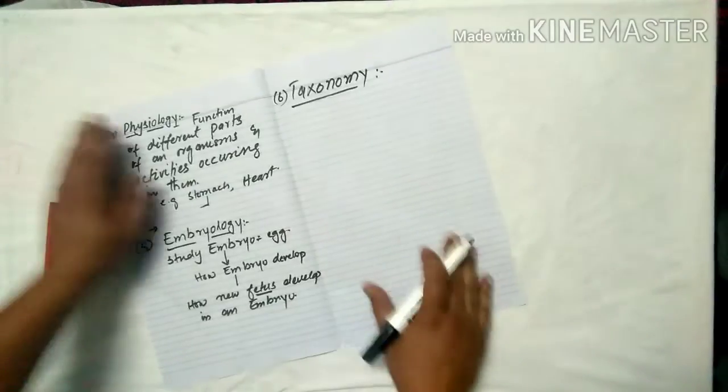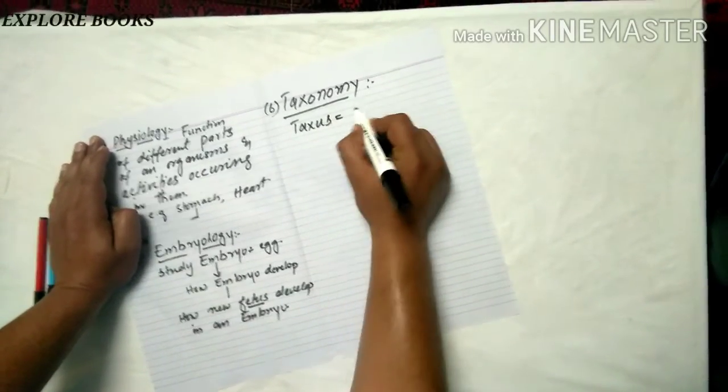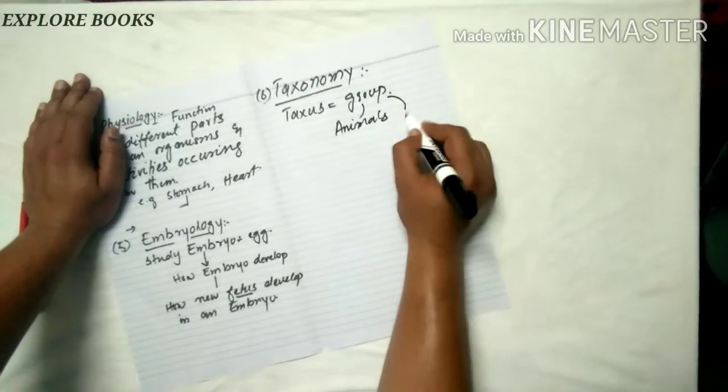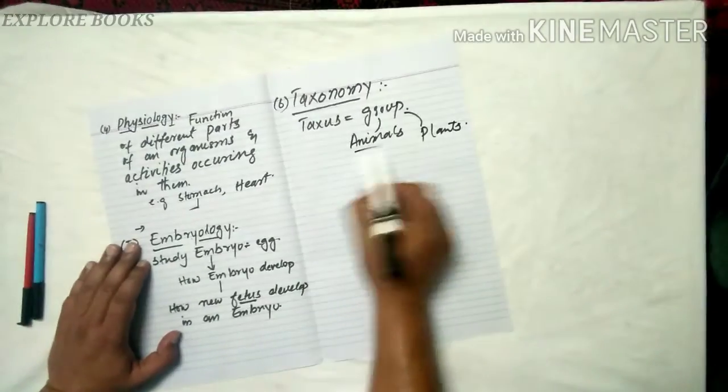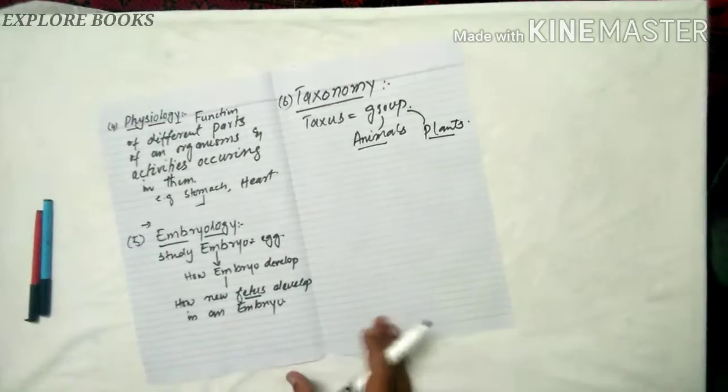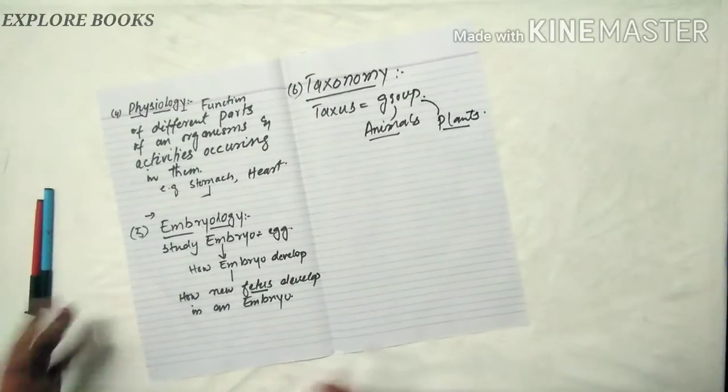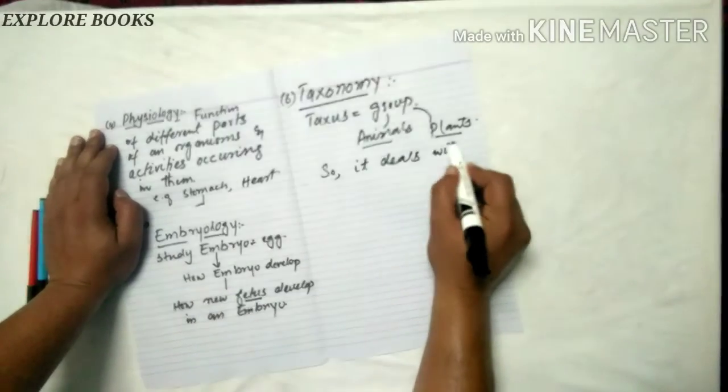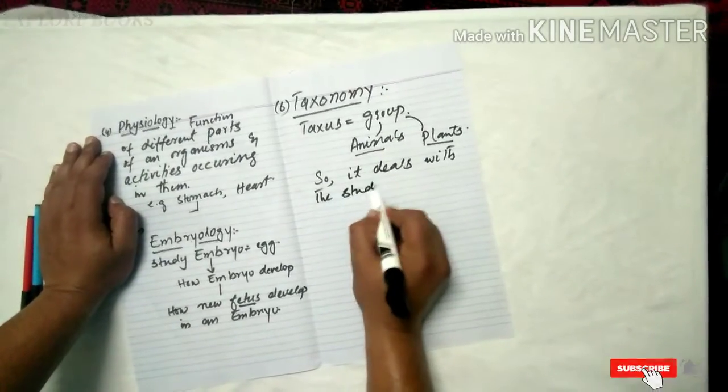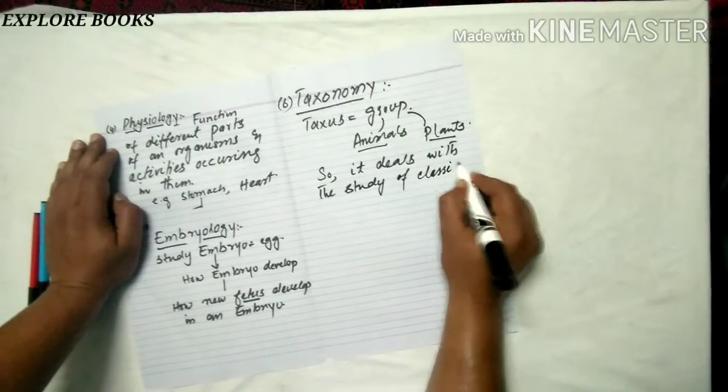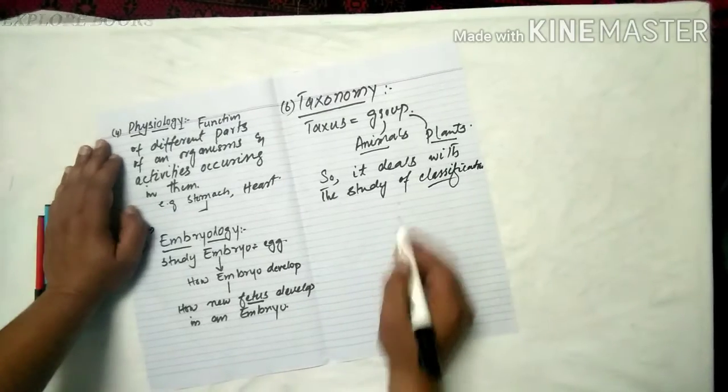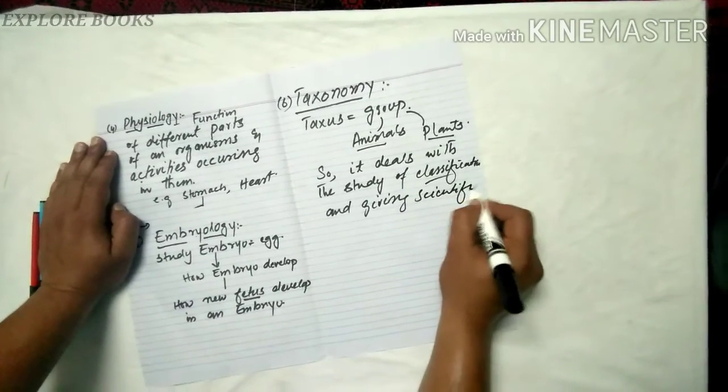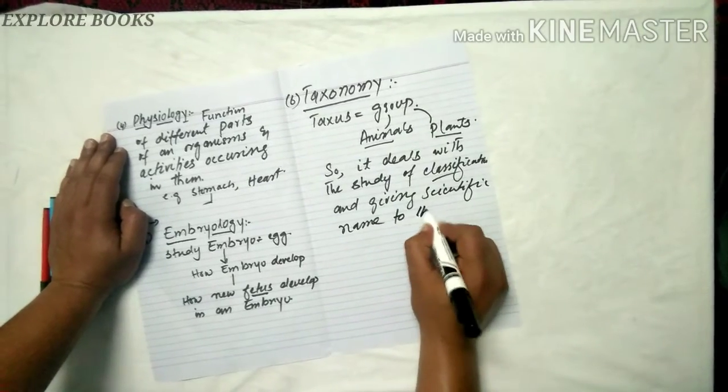Taxonomy. What is taxonomy? The grouping of animals, group of plants, and giving scientific names of organisms. So it deals with the study of classification, classification and giving scientific names to organisms.